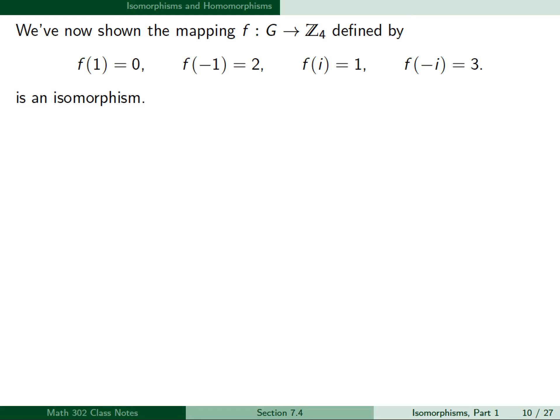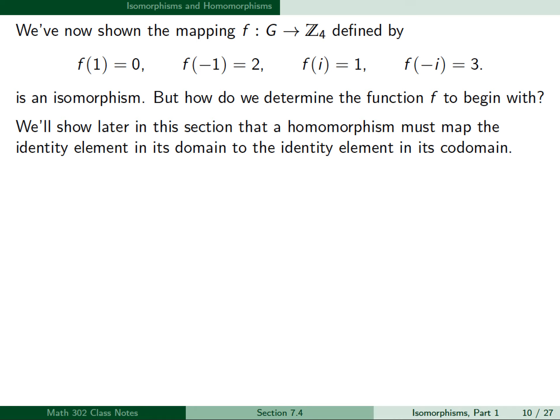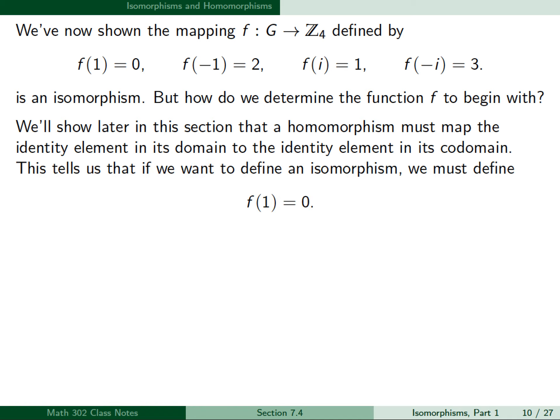We've shown that the mapping f from G to Z4, defined by f(1) = 0, f(-1) = 2, f(i) = 1, and f(-i) = 3, is an isomorphism. But how do we determine the function f to begin with? We'll show later in this section that a homomorphism must map the identity element in its domain to the identity element in its codomain. This tells us that f(1) must be 0, since 1 is the identity in G and 0 is the identity in Z4.